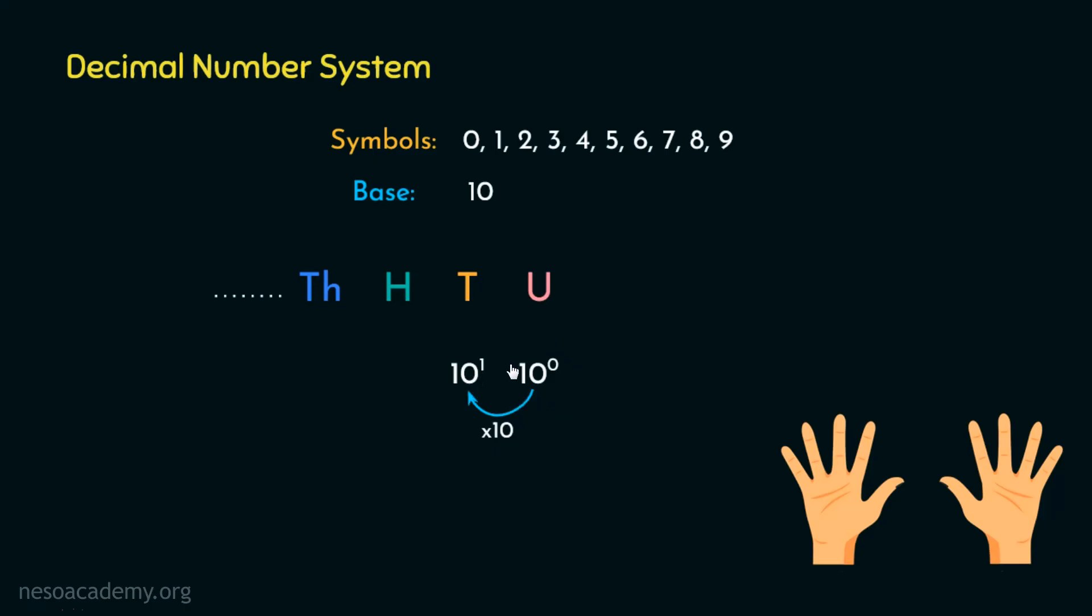Basically, 10 raised to the power 0 is 1, and multiplying 10 with that, we are getting 10. That's it. Now after the symbol of tens place gets changed 10 times, we get to change the symbol in hundreds place, which has the place value 10 squared, or 100.